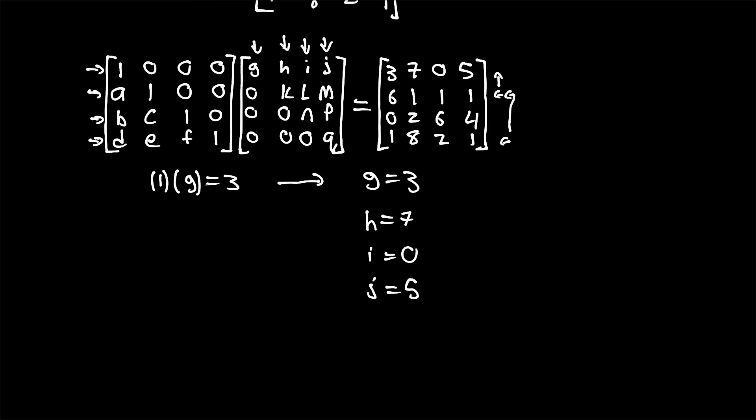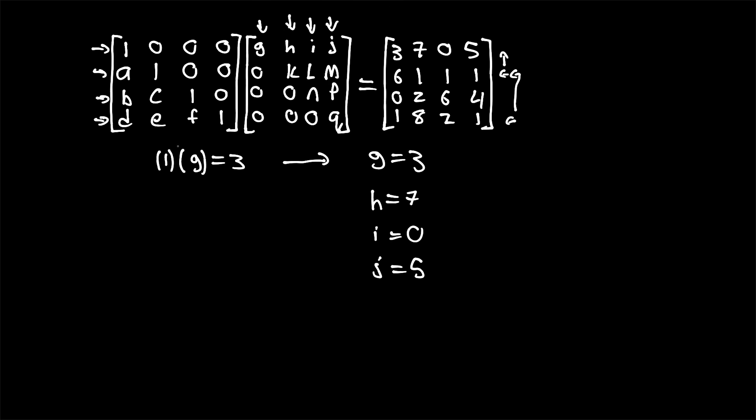Now that we've solved the top row of our upper matrix, let's start with the second row here. That's going to be A times 1, 0, 0. That's going to be times G. So therefore, A times G plus 1 times 0, because there's just a 0 here, that's going to be equal to, this is in our second row in our first column, therefore, it's going to be equal to 6.